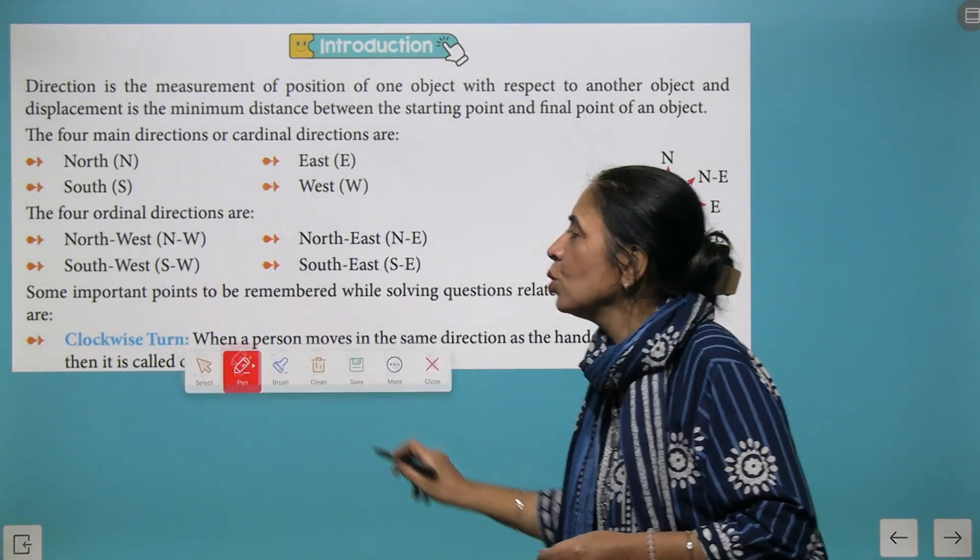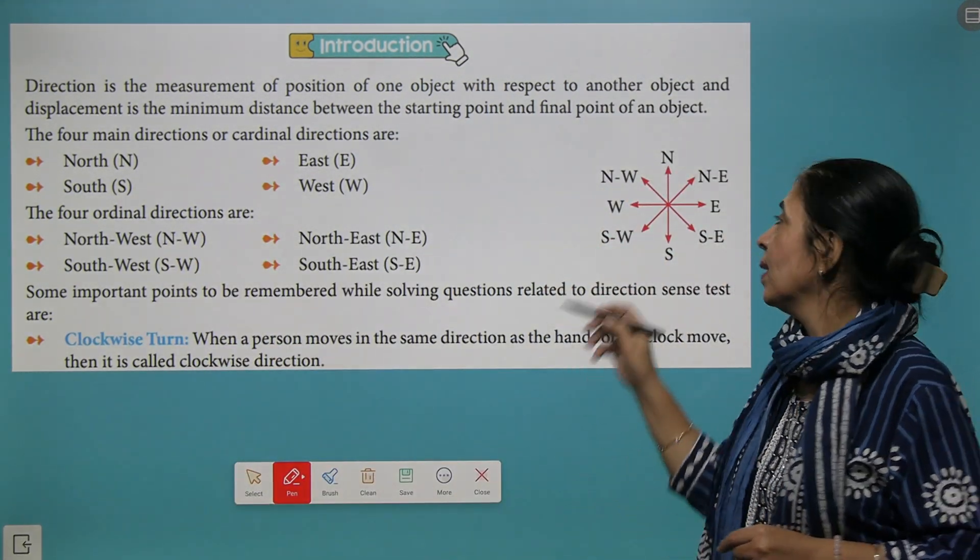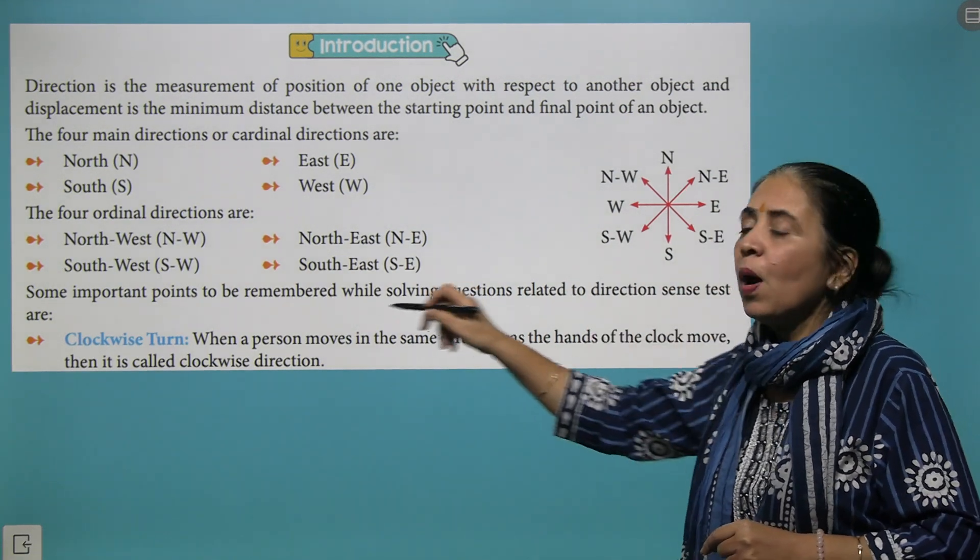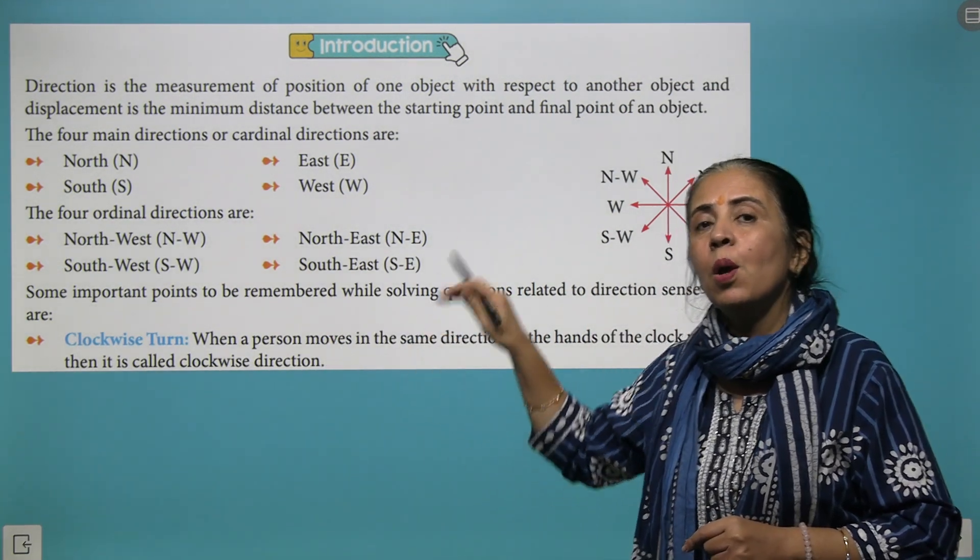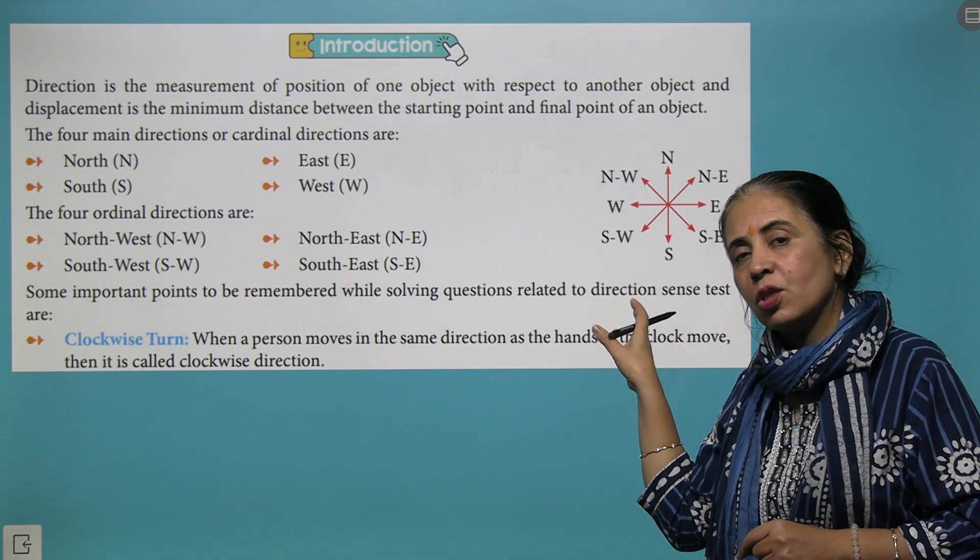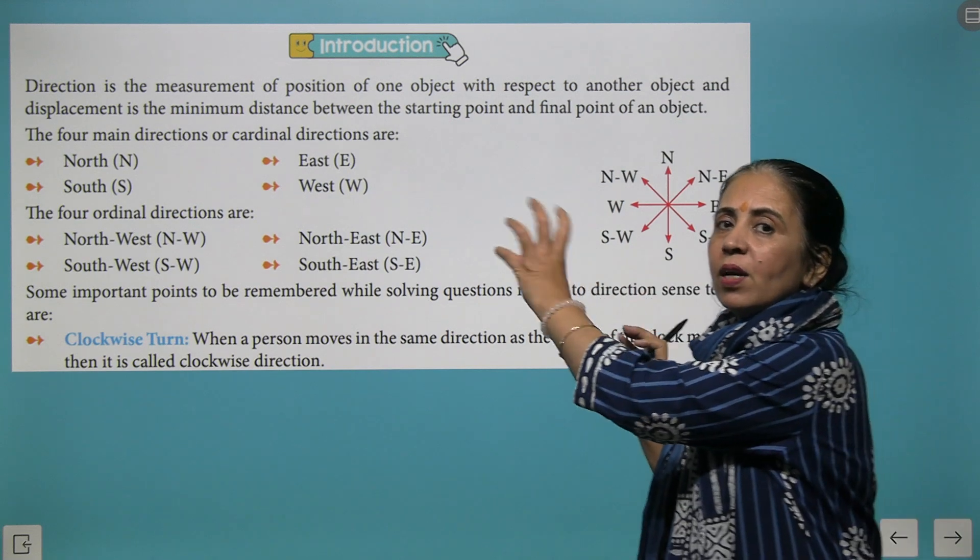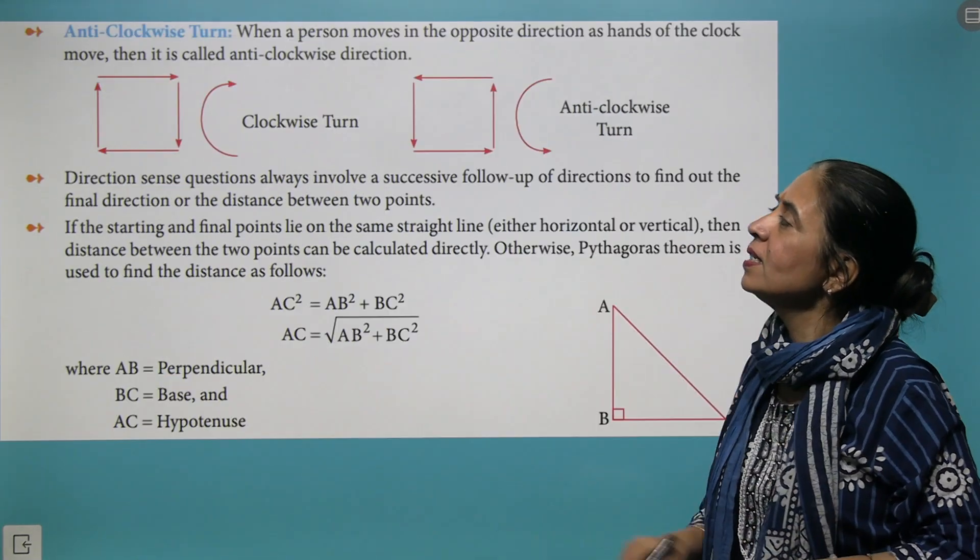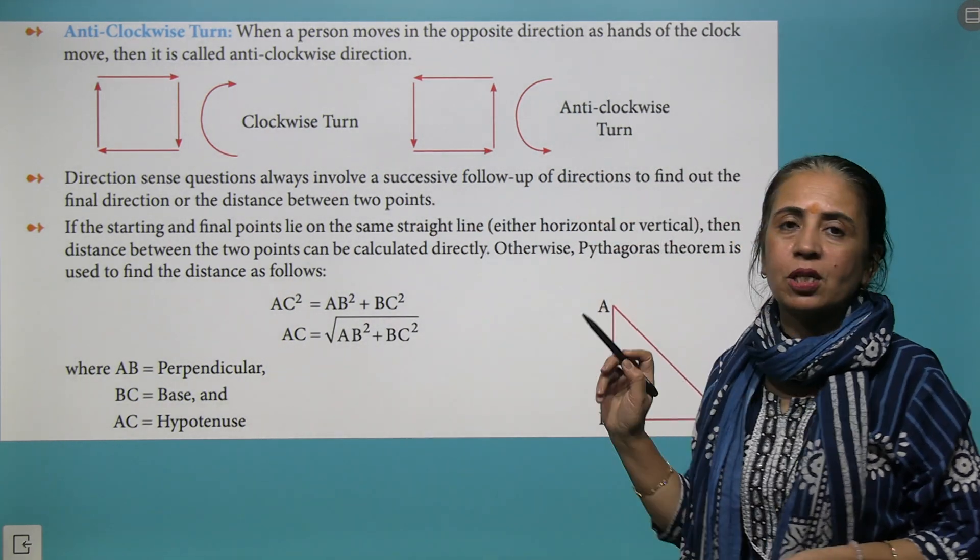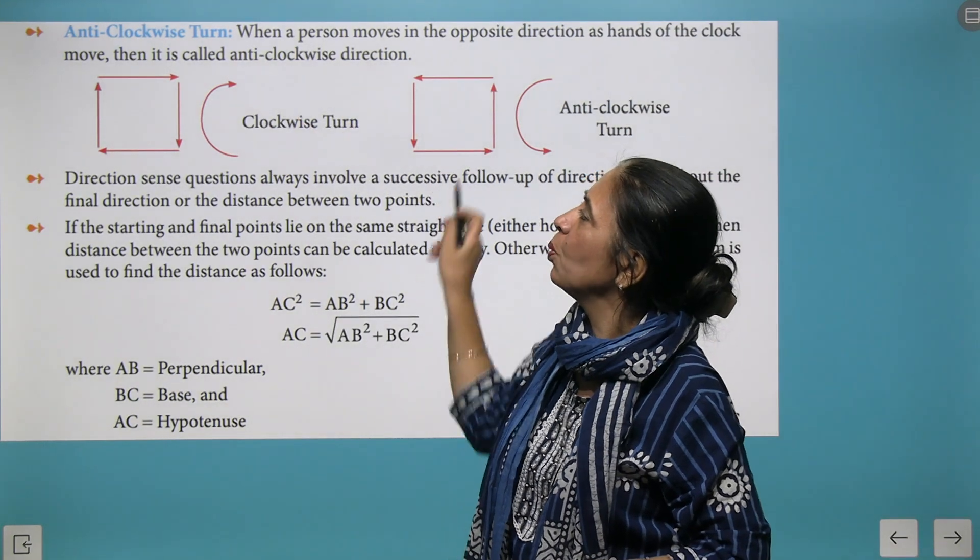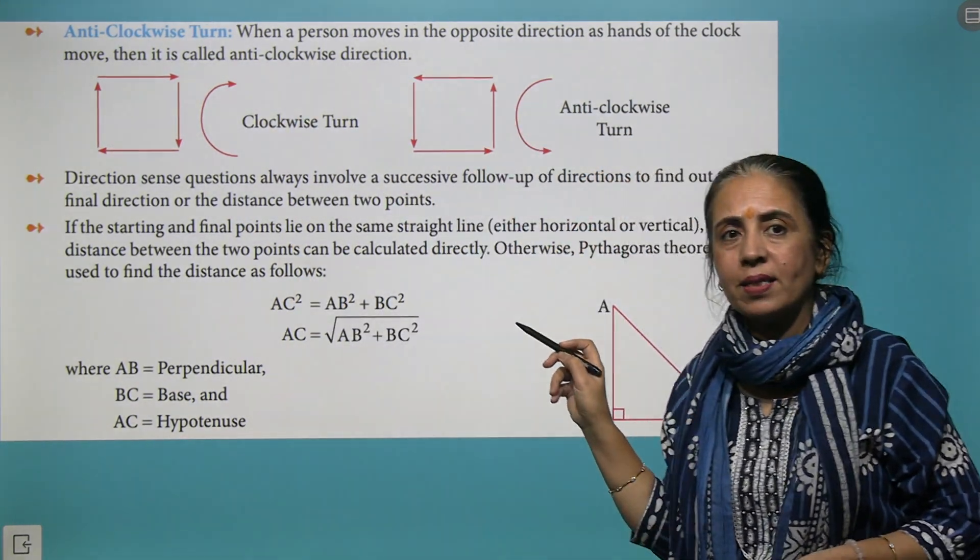When you talk about 180 degrees, that is entirely half the circle. What is clockwise turn? When the turn is in the direction of the clock, it is clockwise. When it goes in the opposite direction of the clock, we say it is anti-clockwise direction.